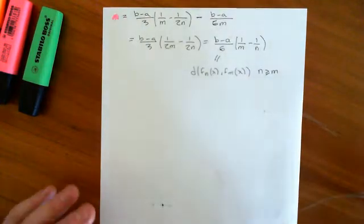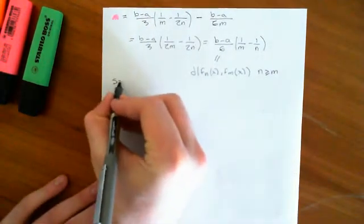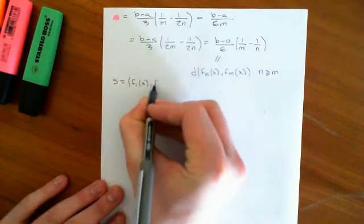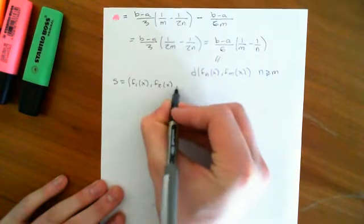So now, let's just remember the Cauchy criterion. If we've got a sequence S, which is the sequence F1 of x, F2 of x, F3 of x, etc.